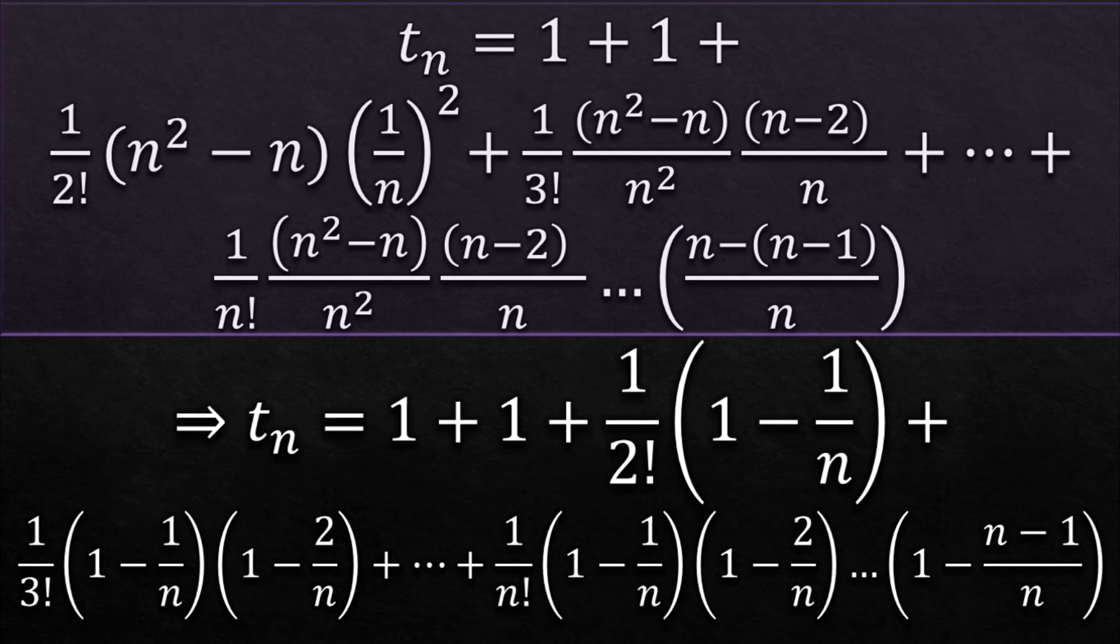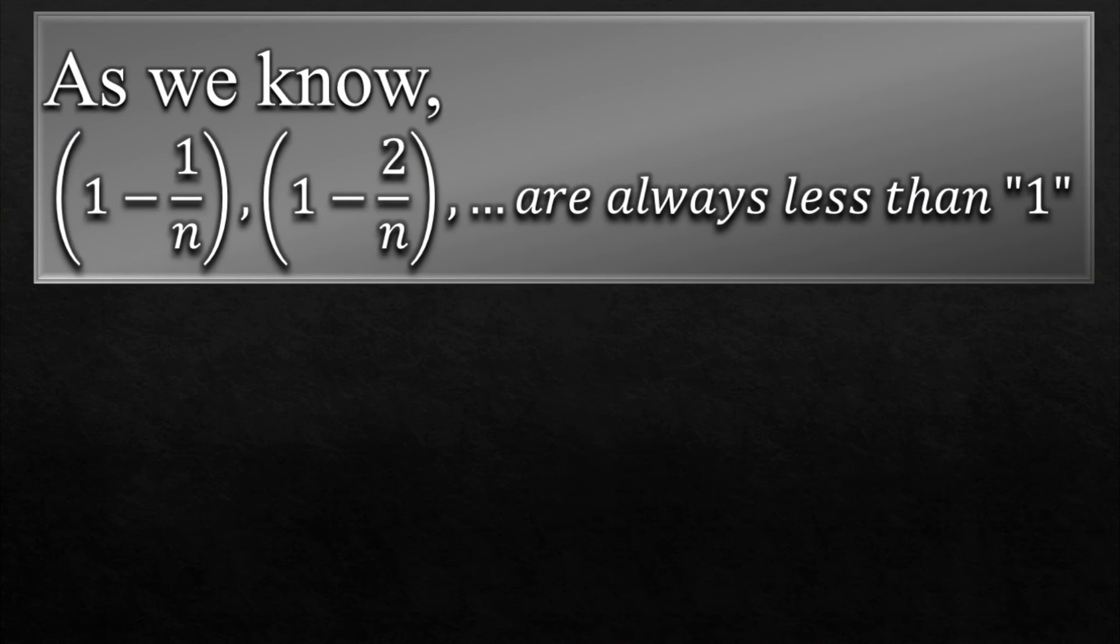Here we just simplified it a little bit more. Here you can see that Tn is quite similar to Sn except for this part. This is quite interesting. So if we examine this part we can understand the relation between Sn and Tn which will help us to move further in the proof.